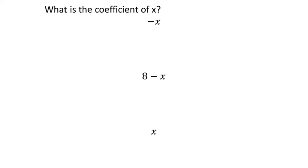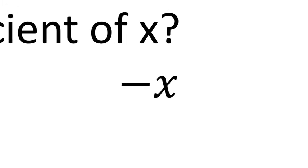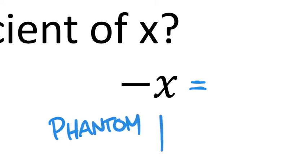The coefficient of x can be tricky when we're just starting. Some students say there is no coefficient when they see just x by itself, but there is — it's what we call a phantom one. It's called a phantom one because it's there, you just can't see it. My recommendation is to show it written out until you get more experience, because one of the biggest mistakes is students saying there is no coefficient when there actually is.